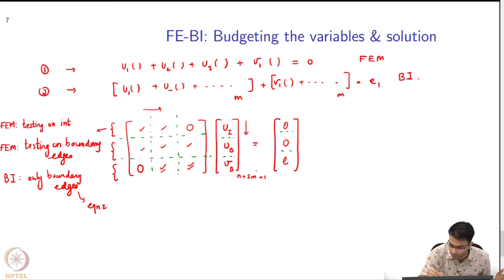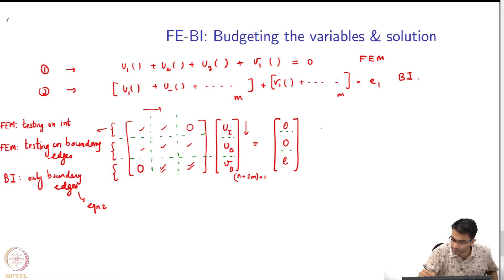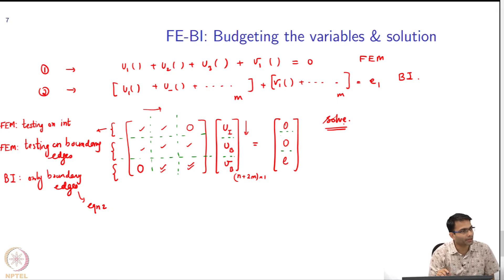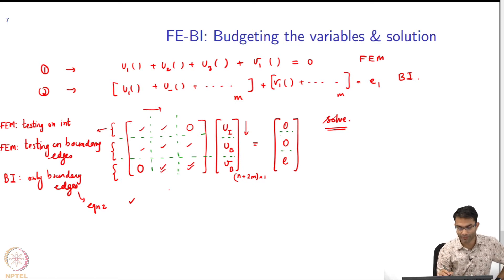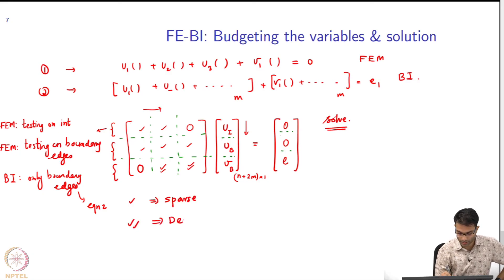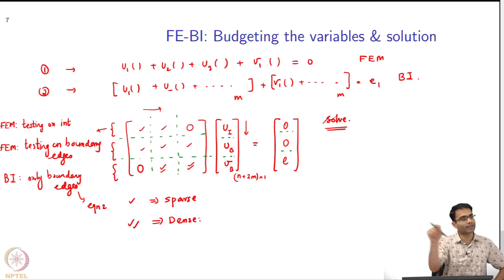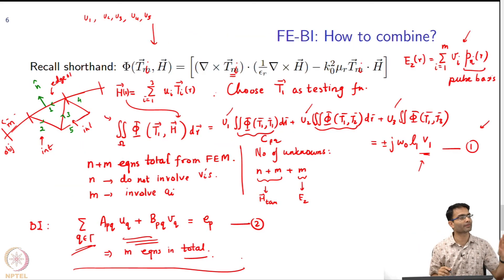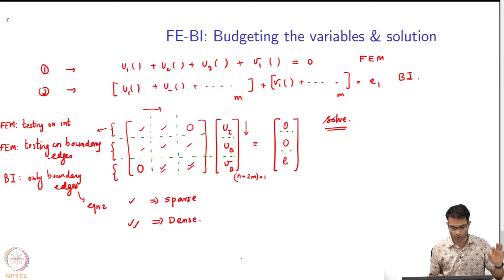So I have a system of equations which is correct — I have n plus 2m equations in n plus 2m variables, and now I can solve this. I have put a single tick on some boxes and a double tick on another box. Single tick is sparse. Double tick is going to be dense, because in equation 2 every edge is involved in everything — that was the case in the boundary integral; every edge was involved. That is why my system of equations was dense.